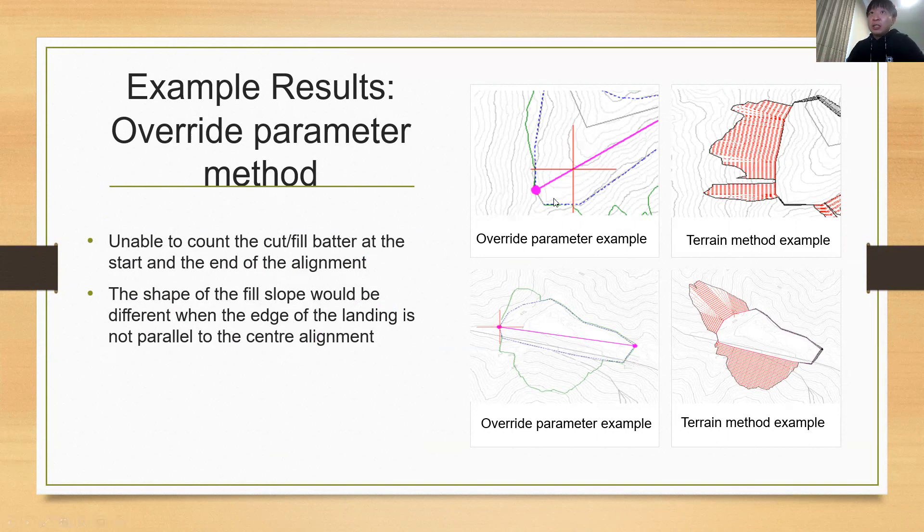You can see here, there's no estimation on the start and the end of the override parameter method. And the second reason is that in RoadEng, the template was calculated every certain meter vertical to the alignment. So, in the override parameter method, alignment is actually the centerline of the road, which means the cut and fill slope is also calculated perpendicularly to the centerline. While in the terrain and individual alignment method, alignment is the edge of the landing.